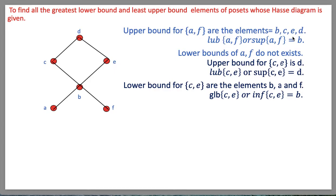The greatest lower bound: an element x belonging to P is said to be the greatest lower bound if x is a lower bound and y is less than or equal to x for all lower bounds y of A. For the set {a, f}, the lower bounds do not exist, so there is no greatest lower bound.